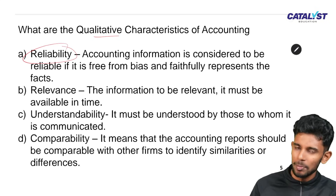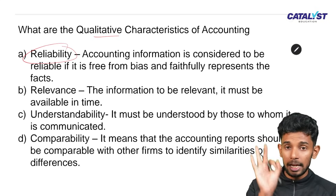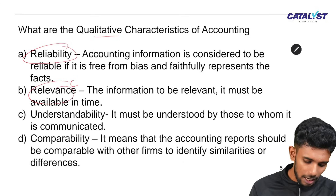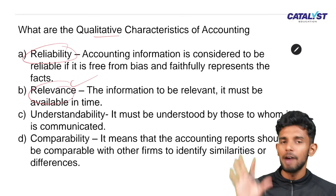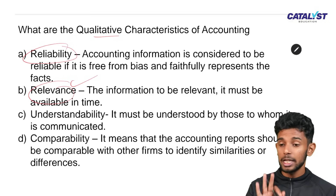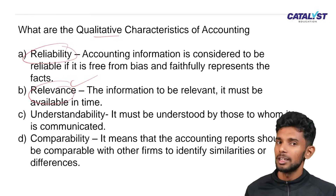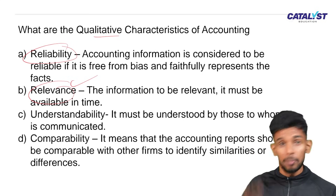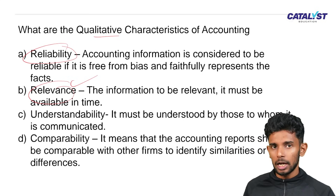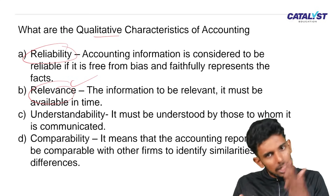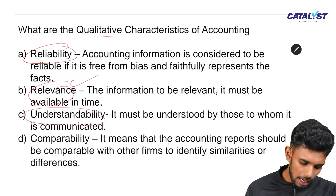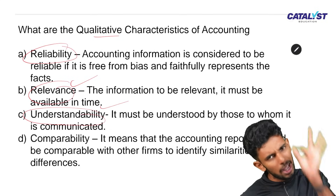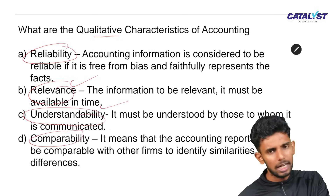The qualitative characteristics of accounting information include: reliability — information must be trustworthy; relevance — right information at the right time to the right person; understandability — accounting information must be prepared in an understandable way; and comparability — we must be able to compare accounting information.